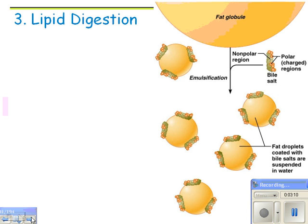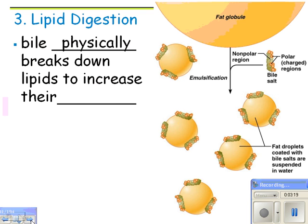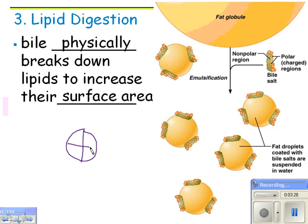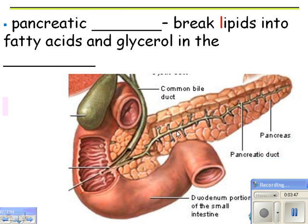Lipid digestion: the first thing you need to do is physically break up lipids, and you do that with bile. Bile physically breaks down lipids to increase their surface area — there are no chemical bonds broken, it just creates more surface area for enzymes to work on. Most of the enzymes are secreted by the pancreas, so pancreatic enzymes break lipids into fatty acids and glycerol in the small intestine.